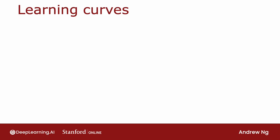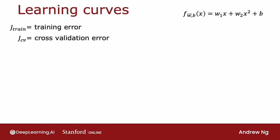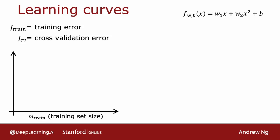Let me plot learning curves for a model that fits a second-order polynomial, a quadratic function. I'm going to plot both JCV, the cross-validation error, as well as JTrain, the training error. On this figure, the horizontal axis is going to be M-train — that is, the training set size, or the number of examples that the algorithm can learn from. And on the vertical axis, I'm going to plot the error, meaning either JCV or JTrain.